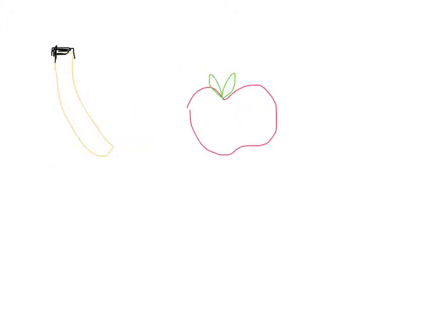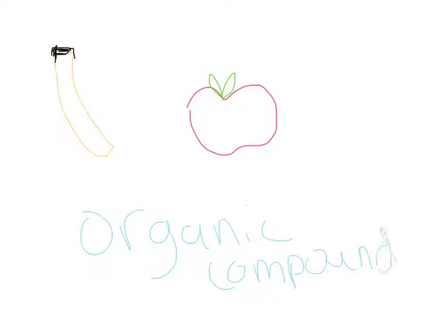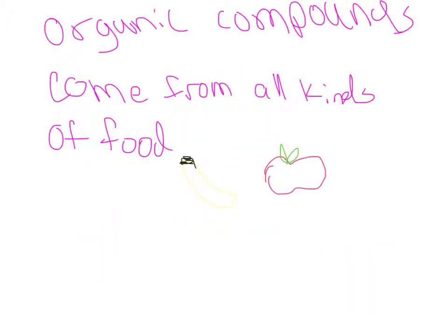For example, an apple would be a type of organic compound source because the apple gets its energy from the sun. So does a banana. Lipids are organic compounds that are found in living things and are an energy storage system.